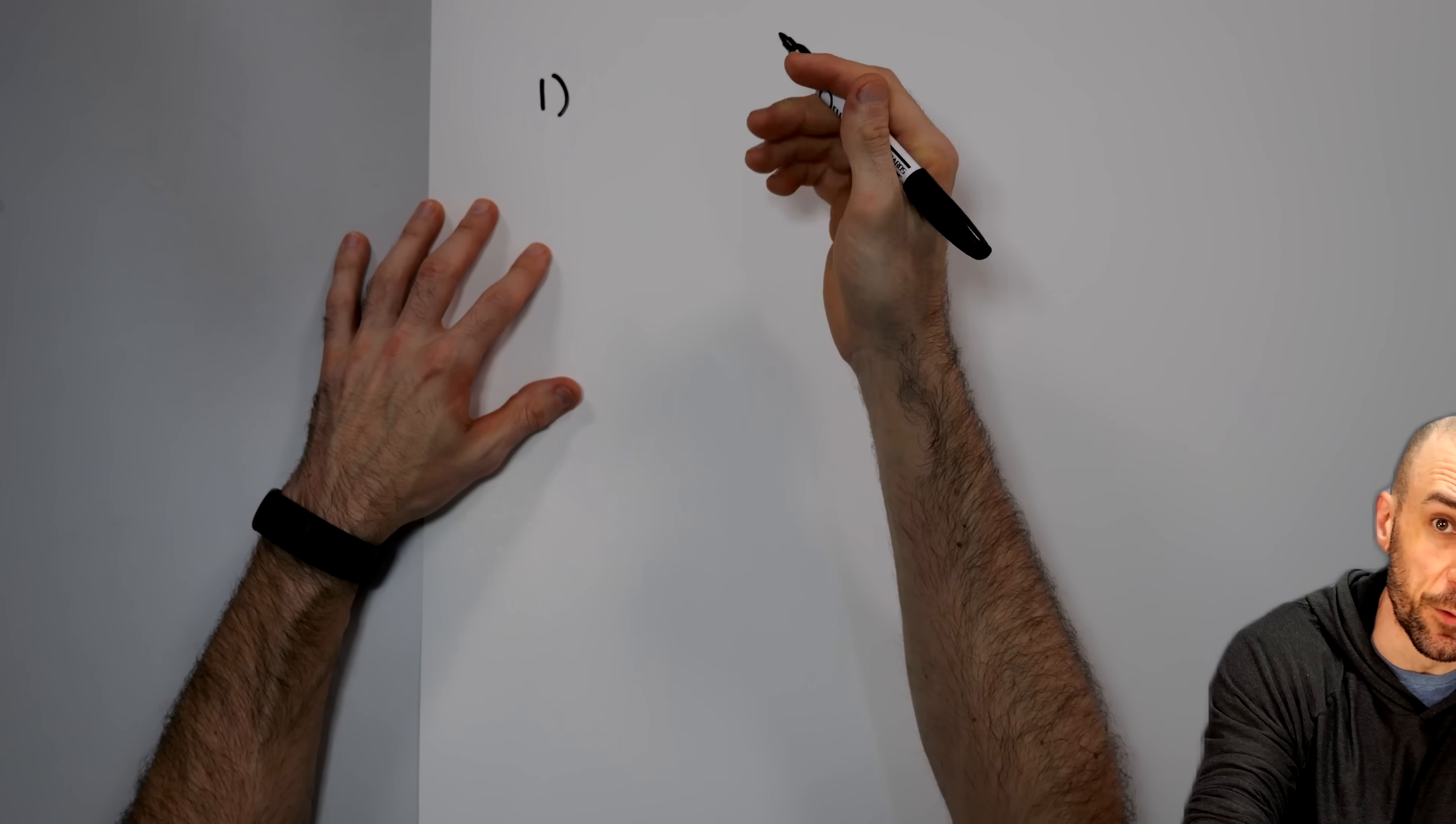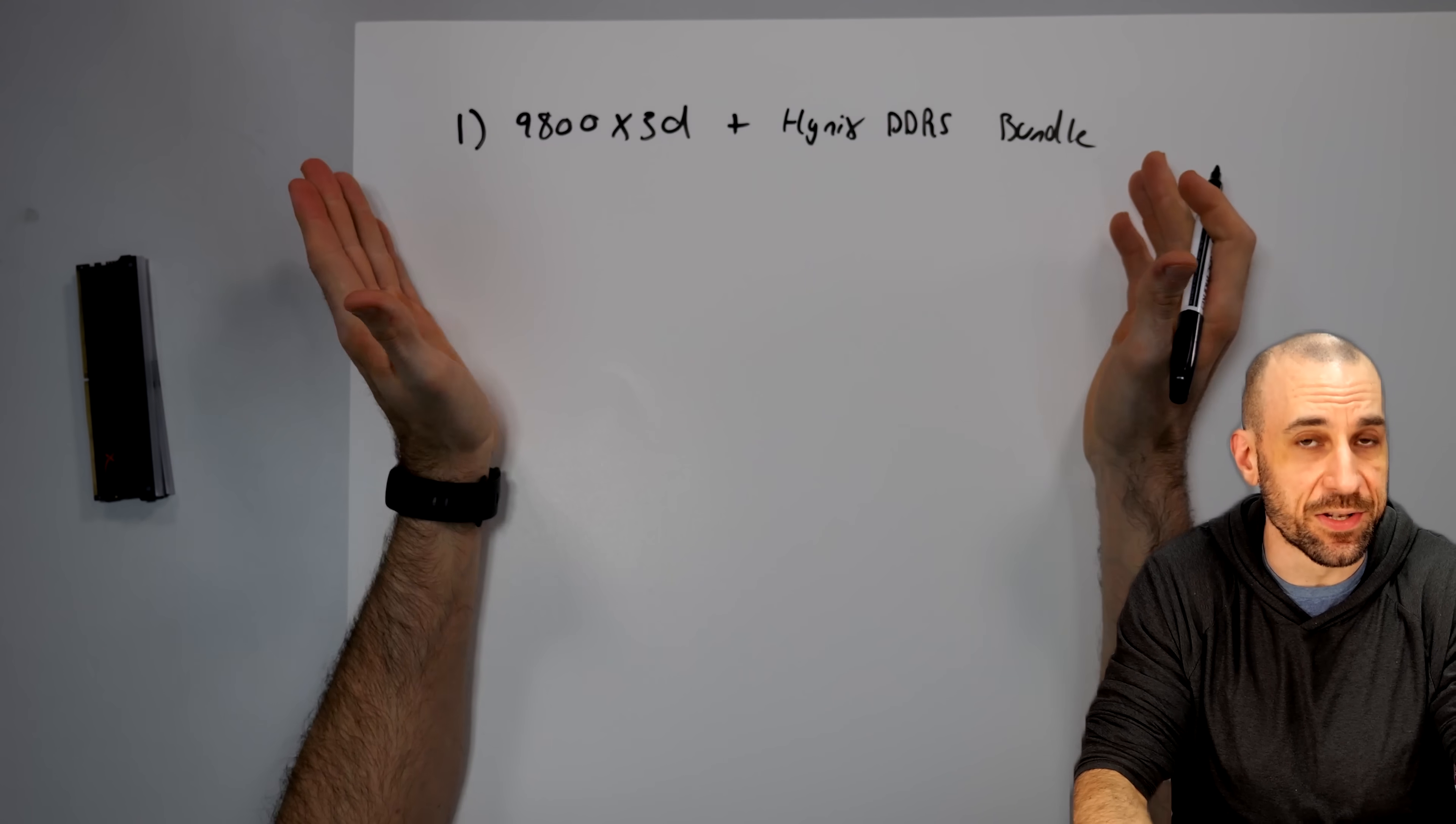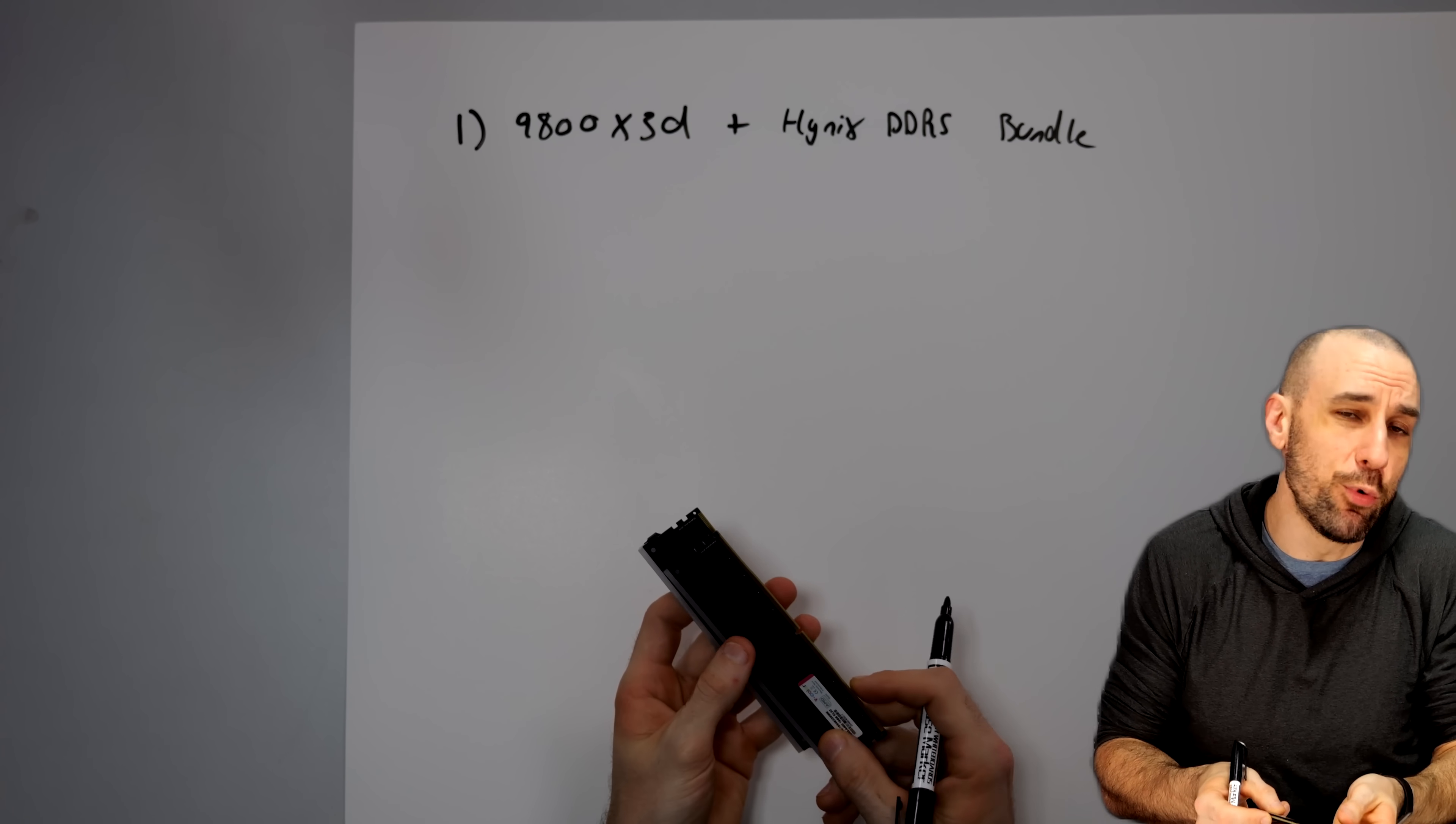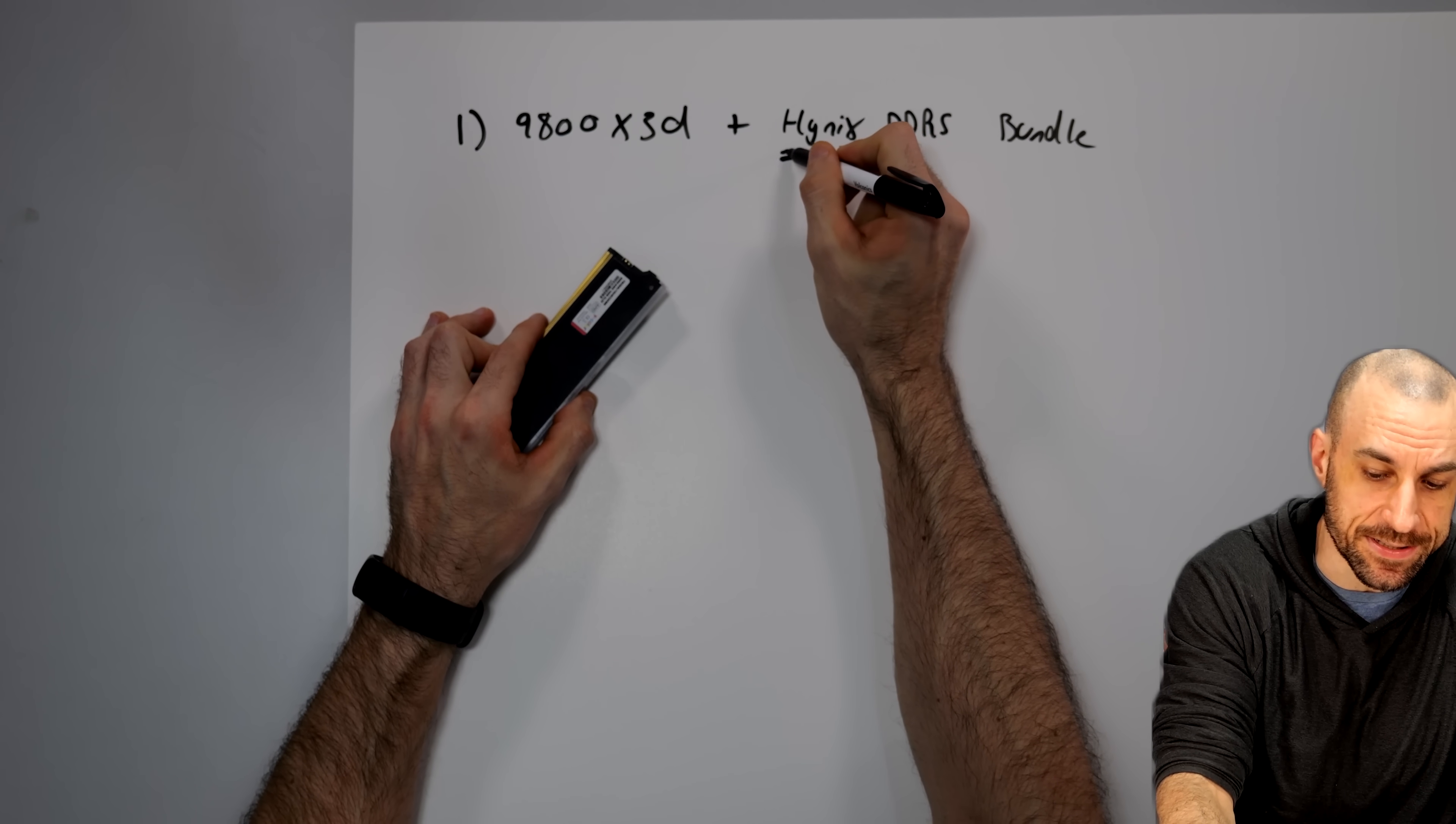The number one thing you want to look for right now is a 9800 X3D bundle plus Hynix DDR5 bundle. The reason why this is number one is because it requires the least amount of work and it also has a little bit of future proofing. Even if you get these ones, you can overclock them later on with just a ton of voltage and good heat sinks on an Intel platform if you ever decide to.